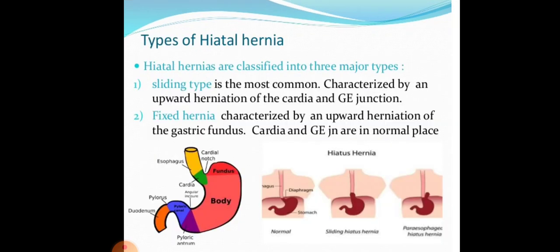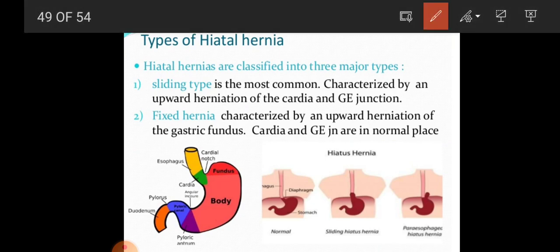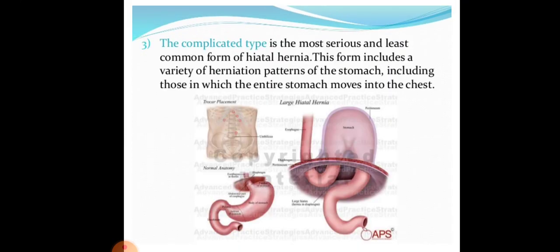There are types of hiatal hernia. The sliding type is most common, characterized by upward herniation of the cardia or gastroesophageal junction. The fixed (paraesophageal) hernia involves herniation of the gastric fundus into the thorax. The complicated type involves most of the stomach entering the thoracic cavity — it is the most serious and least common.